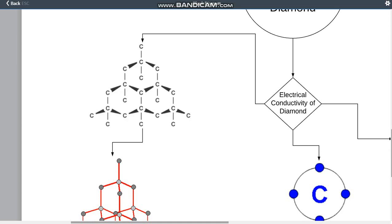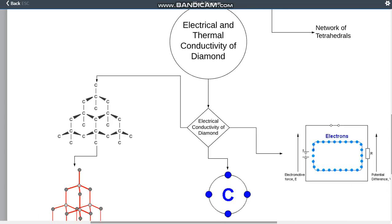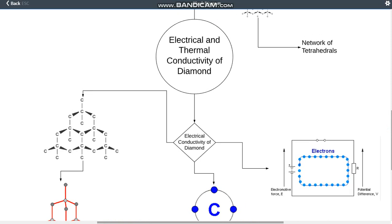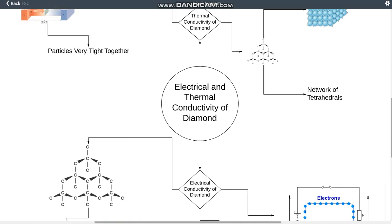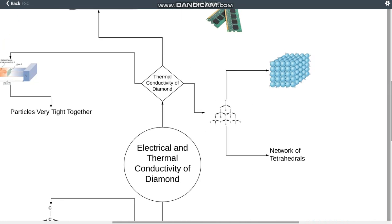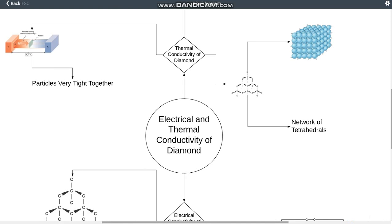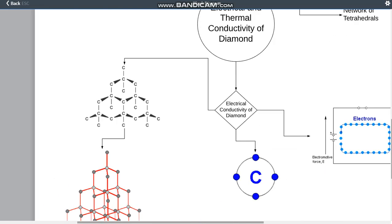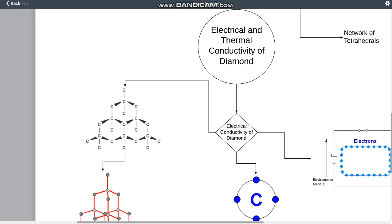So ultimately, to sum everything up, the electrical and thermal conductivity properties of a diamond exist due to its strong covalent bonds, which allow heat to transfer through diamond very quickly, and due to the lack of delocalized electrons, which don't allow diamond to conduct electricity.